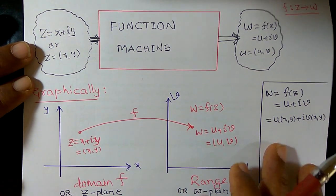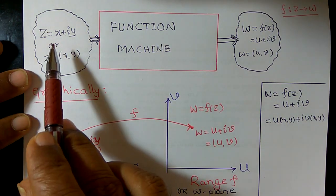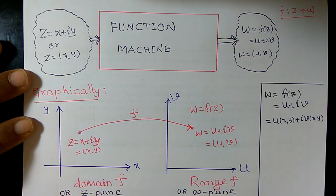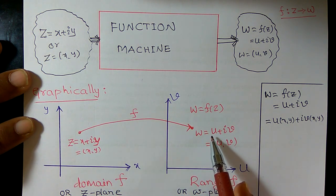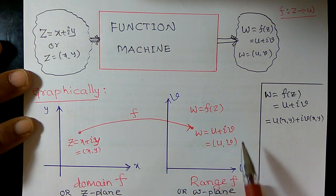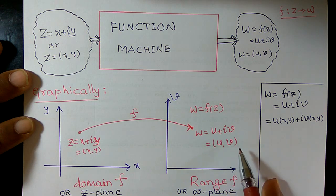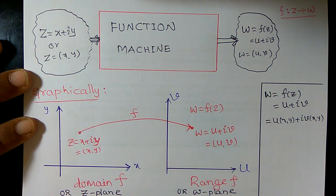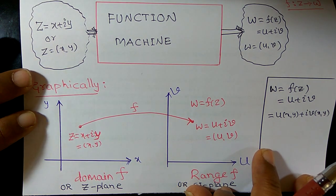So diagrammatically, we can represent z = x + iy means it is a point in the xy plane. So you will get an output. What is the output? w = f(z) = u + iv or ordered pair (u,v). So this we may call it as a domain of f, or sometimes we call it as the z plane.